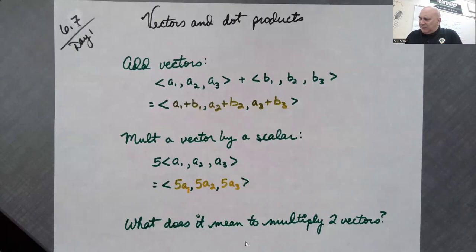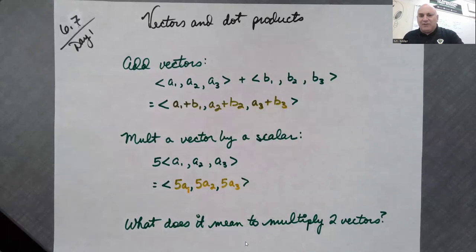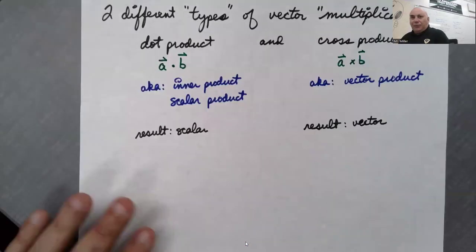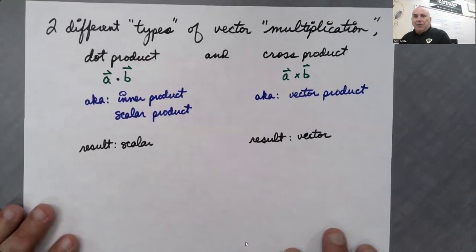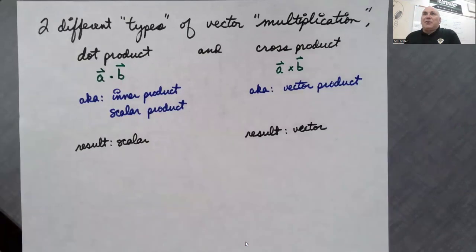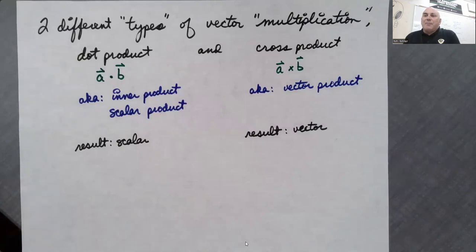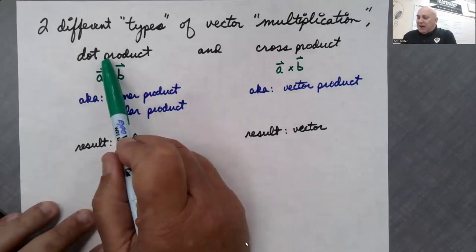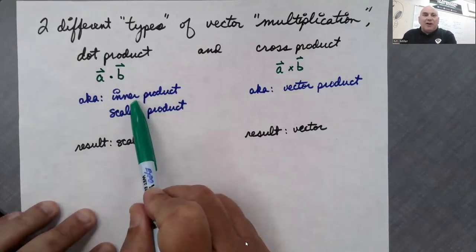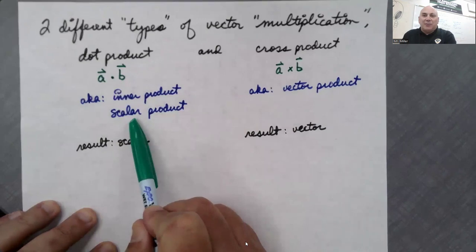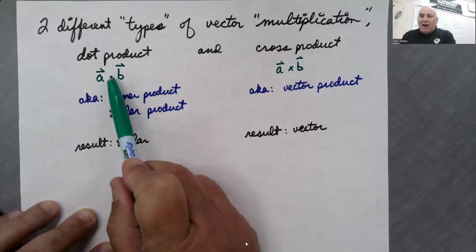But what does it mean to multiply two vectors together? Does that have any meaning? The answer is kind of, sort of.